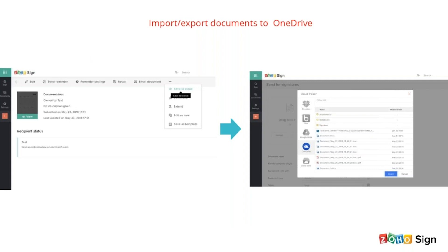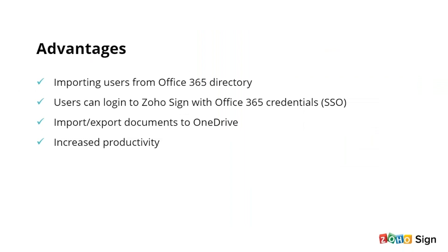Just like with G Suite, you can also import and export documents to OneDrive. The advantages of Office 365 integration include: importing users from the Office 365 directory, users being able to log in to Zoho Sign with Office 365 credentials via single sign-on, and the ability to import and export documents to OneDrive. All of these increase the productivity of your company.